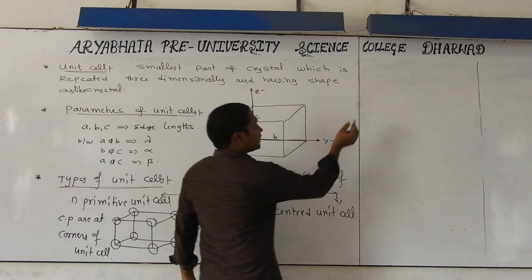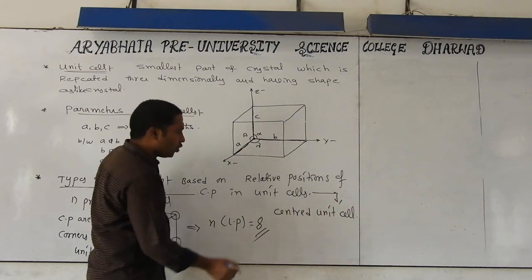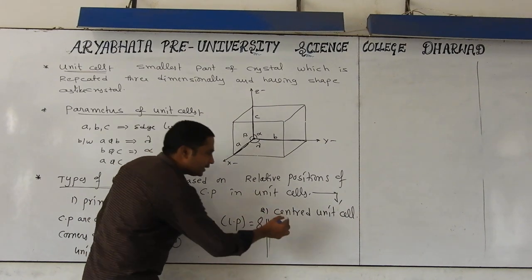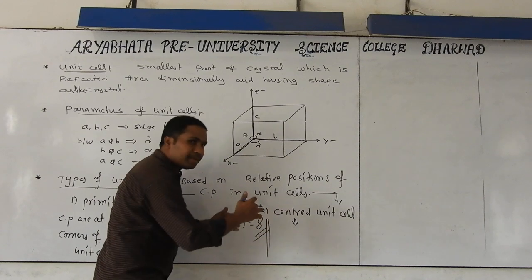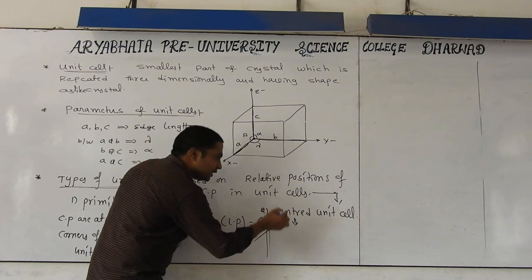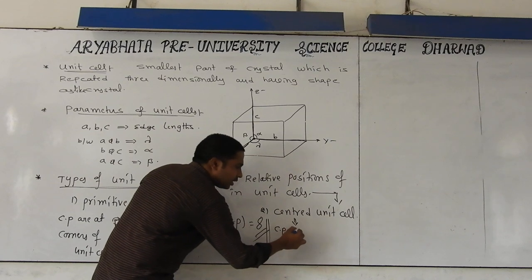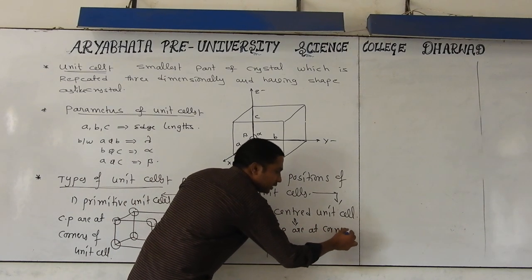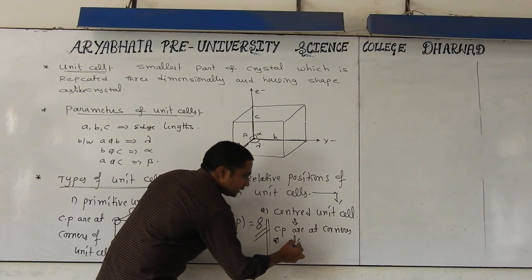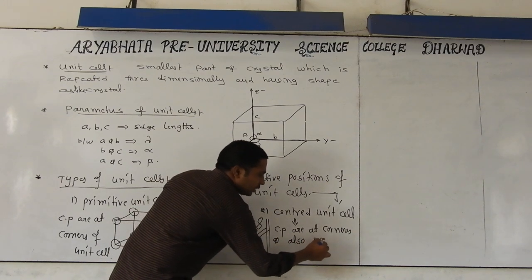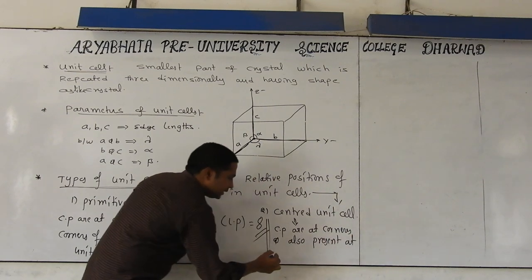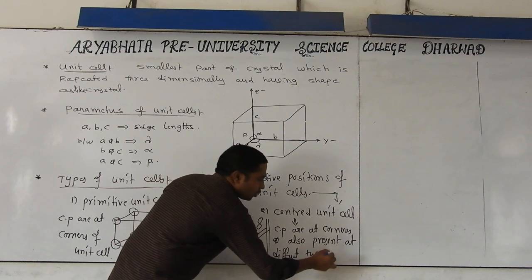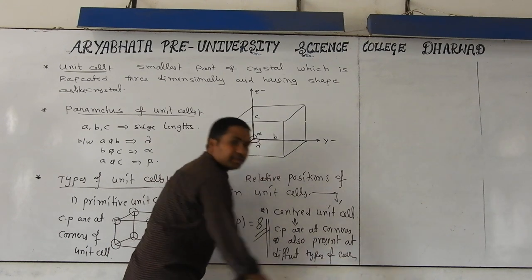Now we are going to discuss about the centered unit cell. This is the second category. What is the meaning of centered unit cell? Centered unit cell means the constituent particles are at corners and also present at different centers — different types of centers of the unit cell.